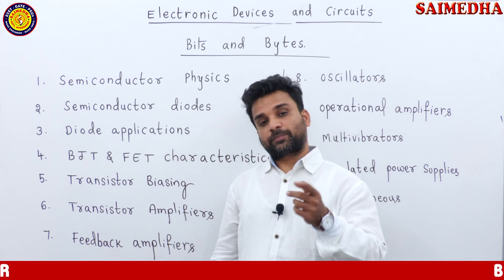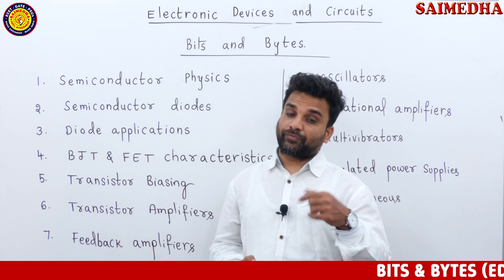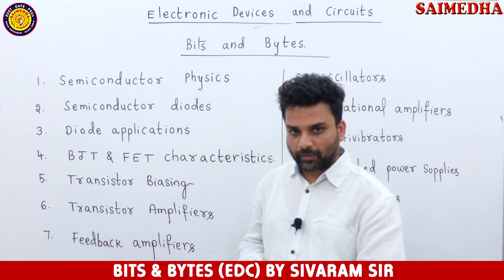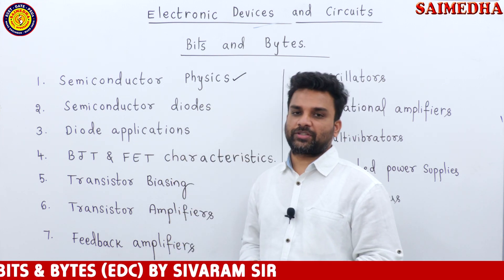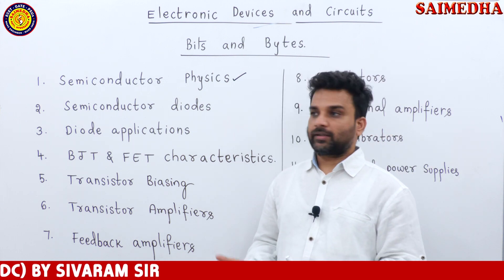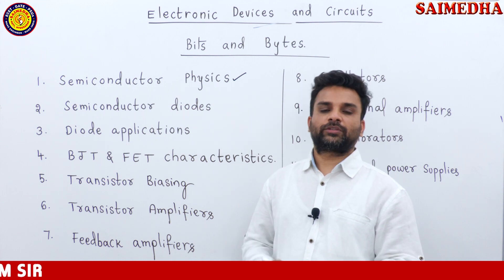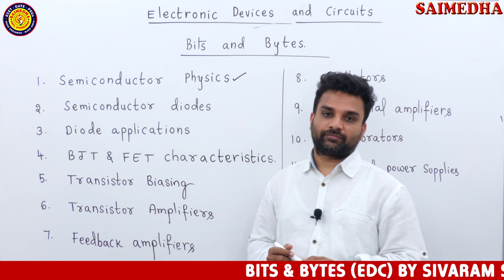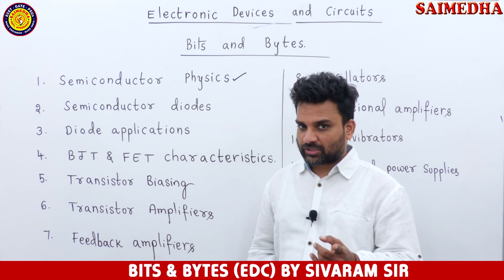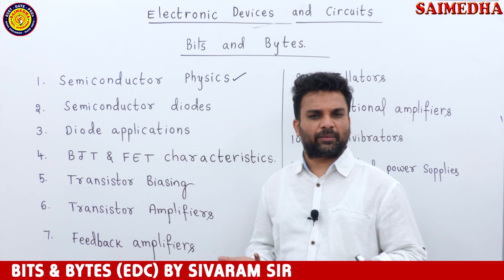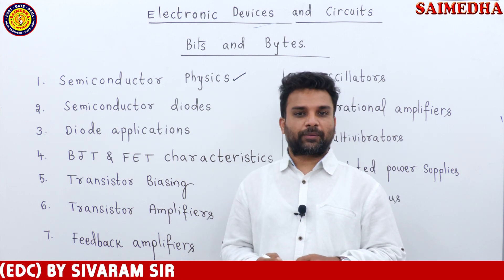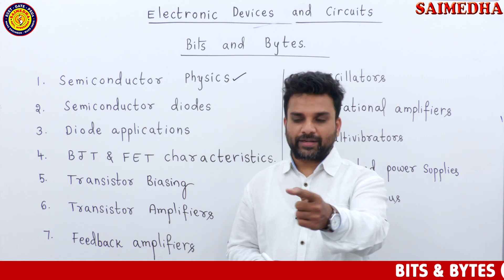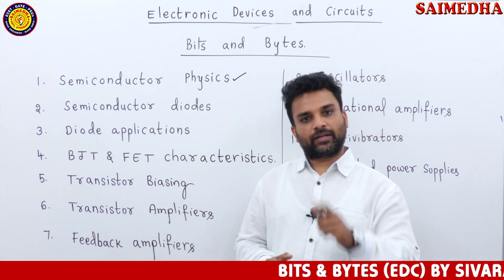In Unit 1 semiconductor physics, we cover: drift current, diffusion current, Einstein relationship, Hall effect, and related topics. All previous questions from this unit will be discussed. Next, Unit 2 covers semiconductor diodes — the PN junction diode with zero bias, forward bias, and reverse bias. We also cover the diode current equation: for every 10 degree rise in temperature, reverse saturation current doubles. Some say 7 degrees — we will clarify that point clearly.